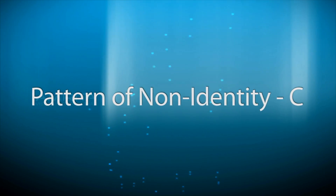Pattern of Non-identity (C). In the pattern of non-identity, none of the antibodies in the anti-serum react with antigenic determinants that may be present in both antigens. That is, the two antigens are immunologically unrelated as far as that anti-serum is concerned.